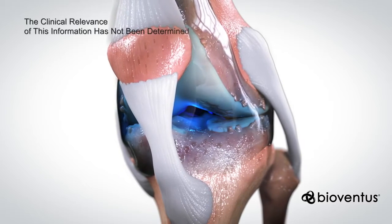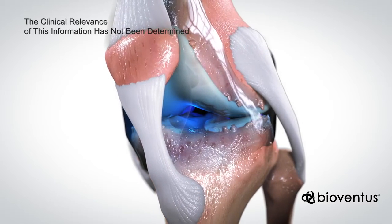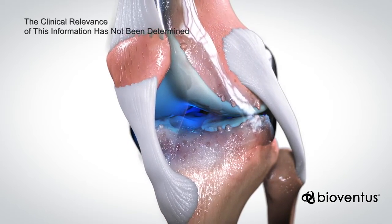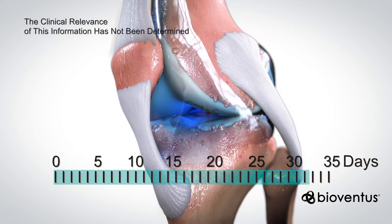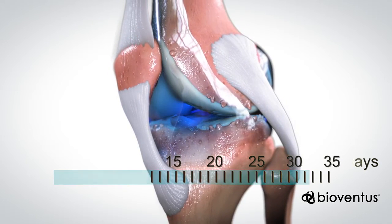A one-time exposure that is comparable to a single injection was used in preclinical studies. In these studies, duralane had a half-life in the joint of 32 days.